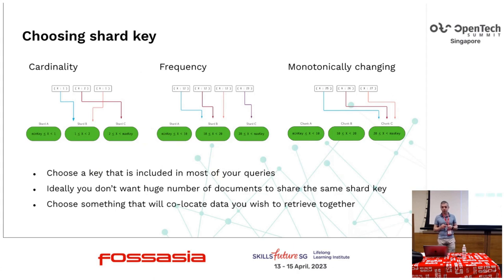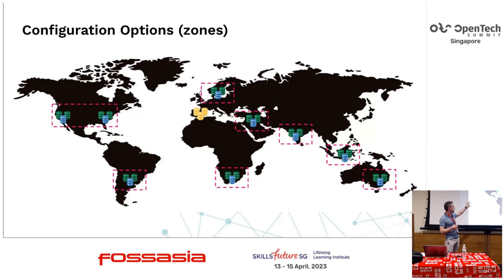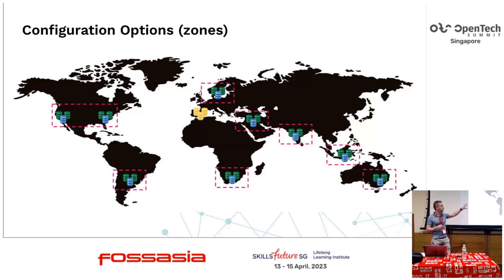Some tips on choosing a shard key: a good shard key should have very high cardinality, low frequency, and should not be a monotonically changing key. Similar to replica set tags, sharded clusters have configuration zones to localize data — for example, tagging shards as North America means documents with that shard key tag will only live in those shards. This is useful for GDPR compliance, where applications must keep their data in Europe.